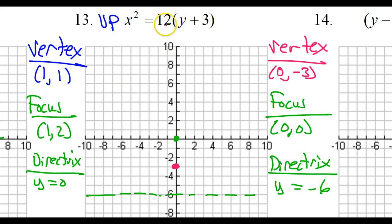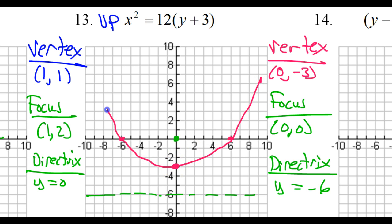My directrix will be down 3 at y equals negative 6. The focal width is 12, so at the focus I'll go 6 to the right and 6 to the left for a total of 12. And there's my drawing.